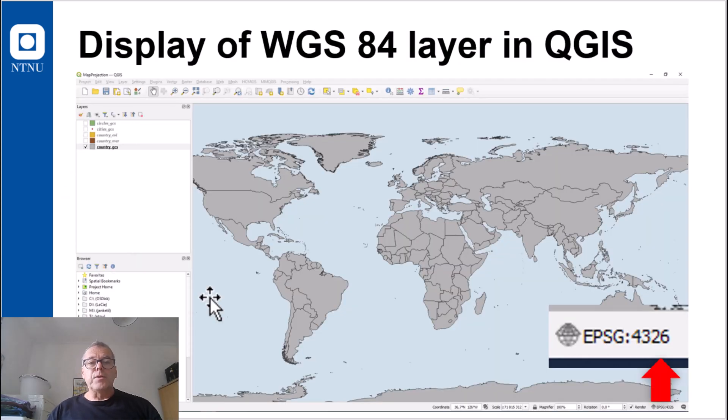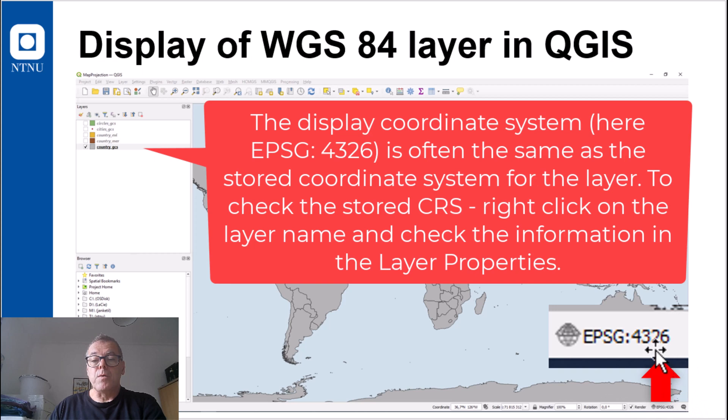And you may notice in QGIS and other software, some information about these semi-major axis and the semi-minor axis, as well as the flattening. And global data very often comes with WGS84 as a coordinate reference system. And in QGIS, you can know this by looking at the information in the lower right corner. Then it might say EPSG4326. And this is just a code for the coordinate reference system WGS84.